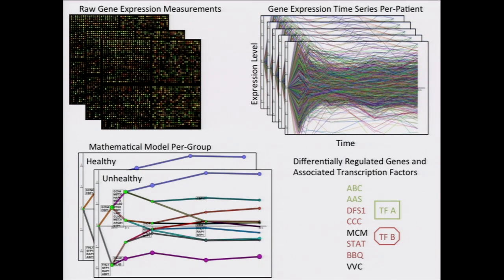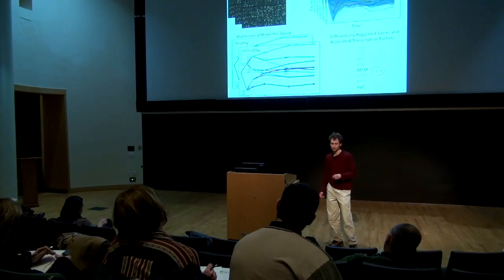Currently, we are applying this technique to real human patient data — a set of patients with idiopathic pulmonary fibrosis, which is a lung disorder. Our method is able to determine which patients are more healthy as well as which patients are less healthy, and additionally, to identify transcription factors that might be causative of this.